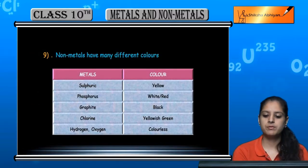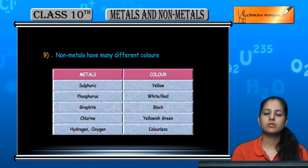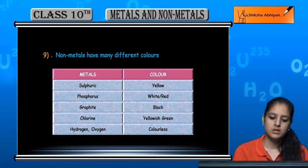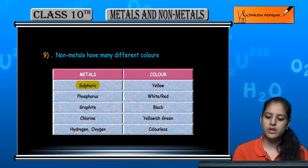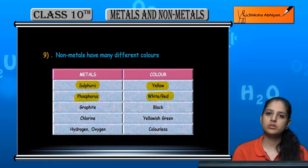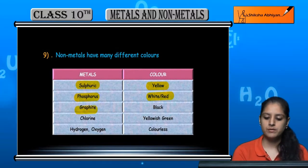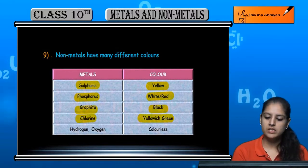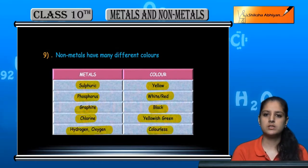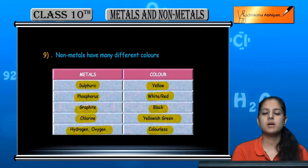Non-metals have many different colors. Unlike metals which are majorly silver and gray, non-metals show great variety: sulphur is yellow, phosphorus is white and red, graphite is black, chlorine is yellowish-green, and hydrogen and oxygen are colorless. So you get a lot of color variety with non-metals.